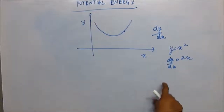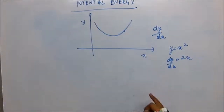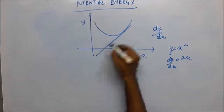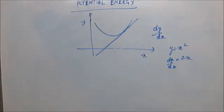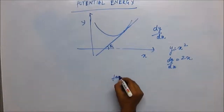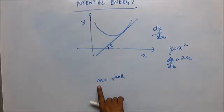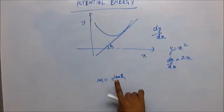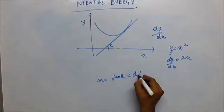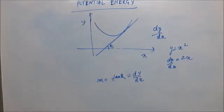Physically, at any point dy/dx is the slope of the tangent drawn there. If you draw a tangent, it makes an angle θ with the x-axis. The slope m = tan θ, where θ is the angle the tangent makes with the x-axis. So tan θ equals dy/dx.